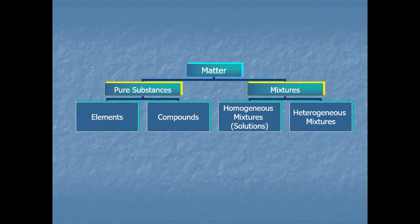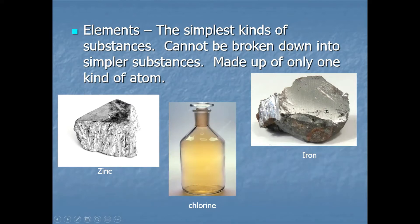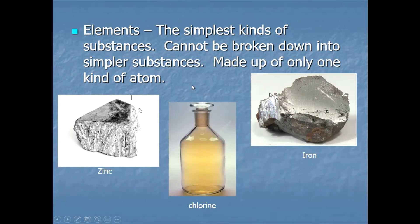Here are some examples of elements. An element is the simplest kind of substance — it cannot be broken down into simpler substances because it's made of only one kind of atom. For example, zinc is a metal where every atom in the sample is a zinc atom. Chlorine is a gas where every atom is chlorine, and iron is another example where every atom is an iron atom.